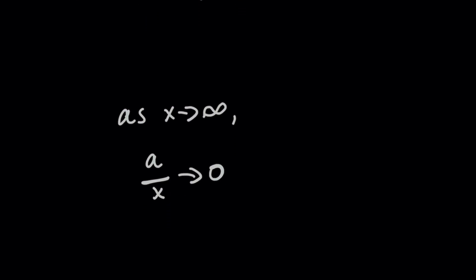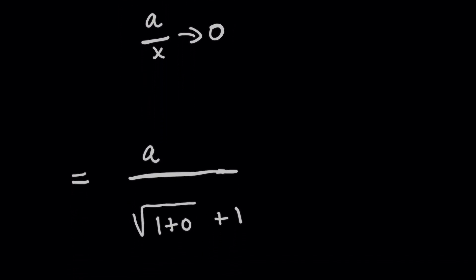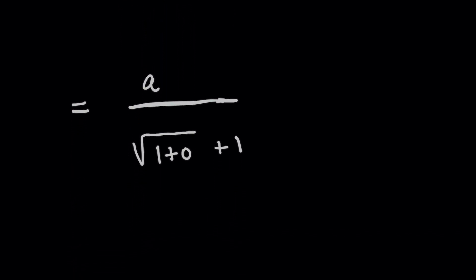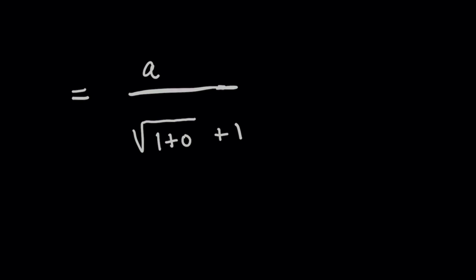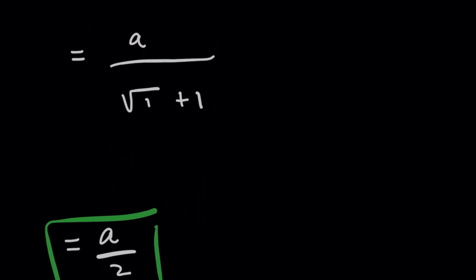So this means that the limit is going to simplify in such a way where that a over x term goes to zero when x grows without bound. And simplifying this expression will give us the following. And you can do this pretty easily. This is your final answer.